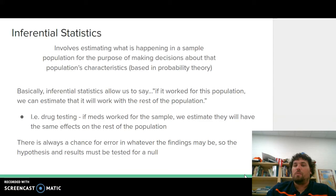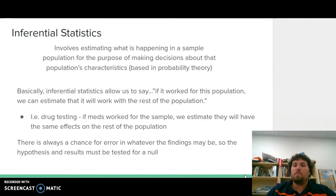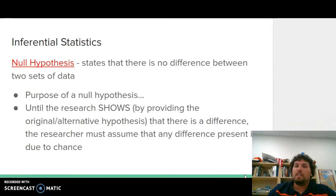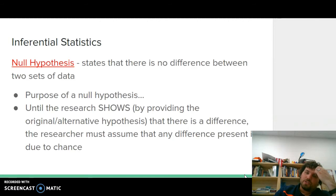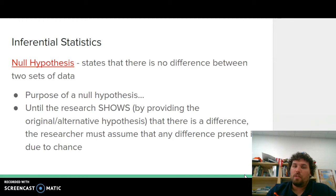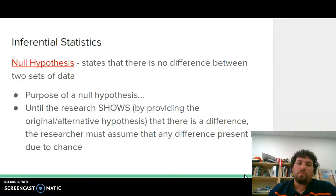There's always a chance for error in whatever the findings may be. So the hypothesis and results must be tested for null. The null hypothesis states that there is no difference between the two sets of data — it's basically the opposite of your hypothesis. The purpose of the null hypothesis is that until research shows a difference, the researcher has to assume any difference present happened by chance and not because of anything the experimenter manipulated. It assumes you're wrong until you prove that you're right.